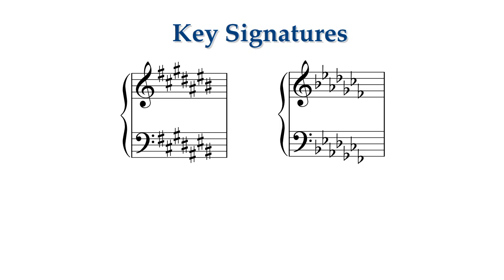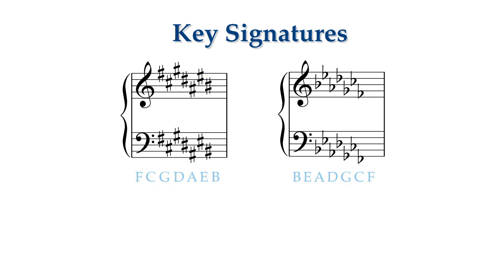Key signatures are always consistent, so they are easier to read. The sharp and flat symbols always go in the same place and they always go in the same order. They combine into a single symbol, just like letters combine to form words. If the sharp or flat symbol is not on the correct line or space, or if it is out of order, it does not make a key signature. When you write your key signatures, the pattern of sharps or flats must be exactly correct.